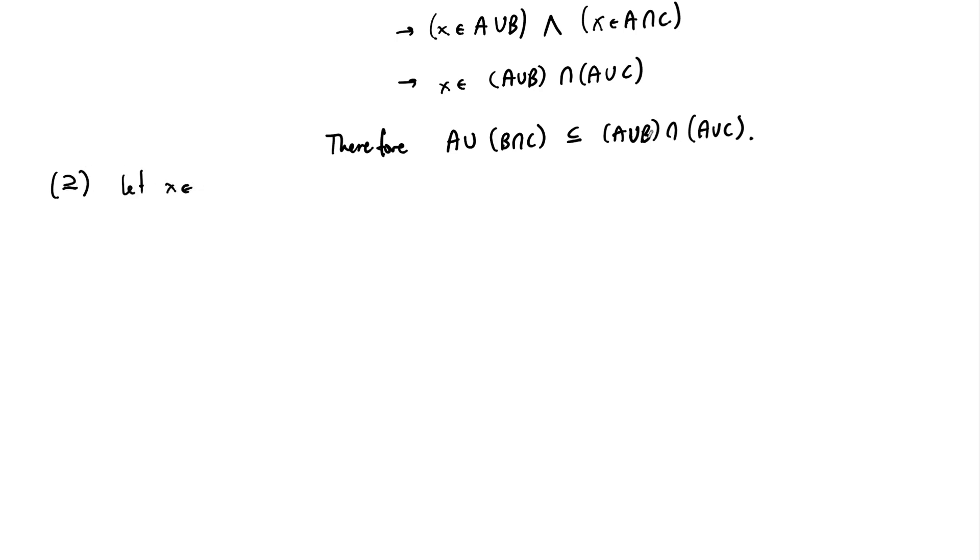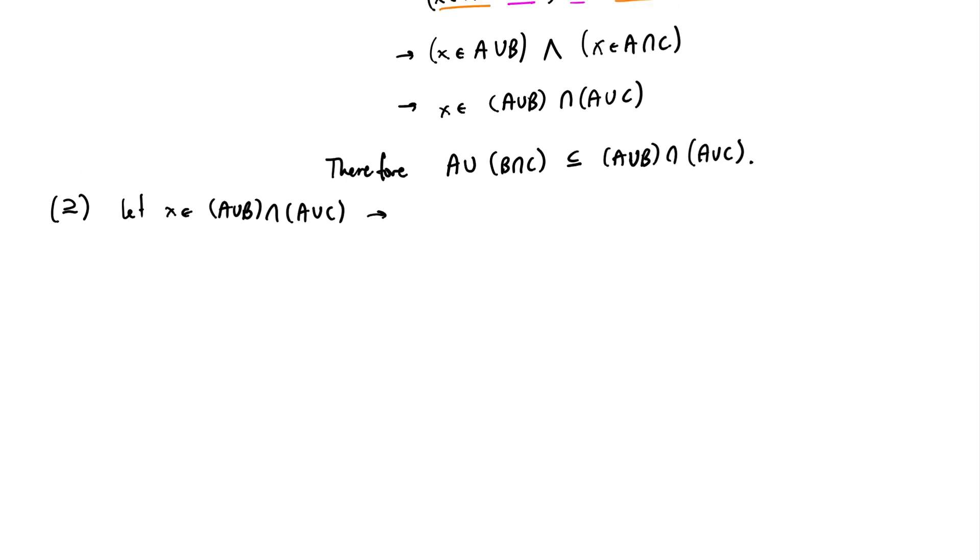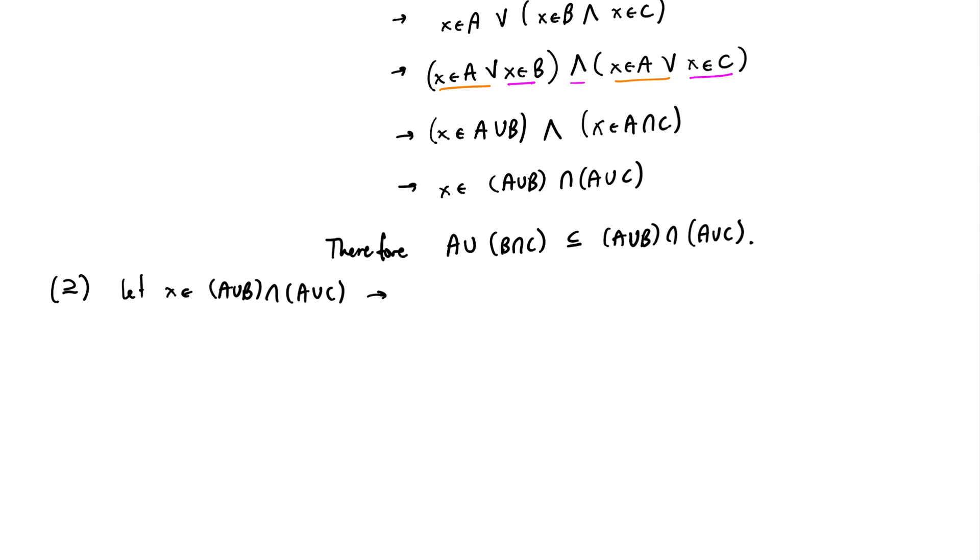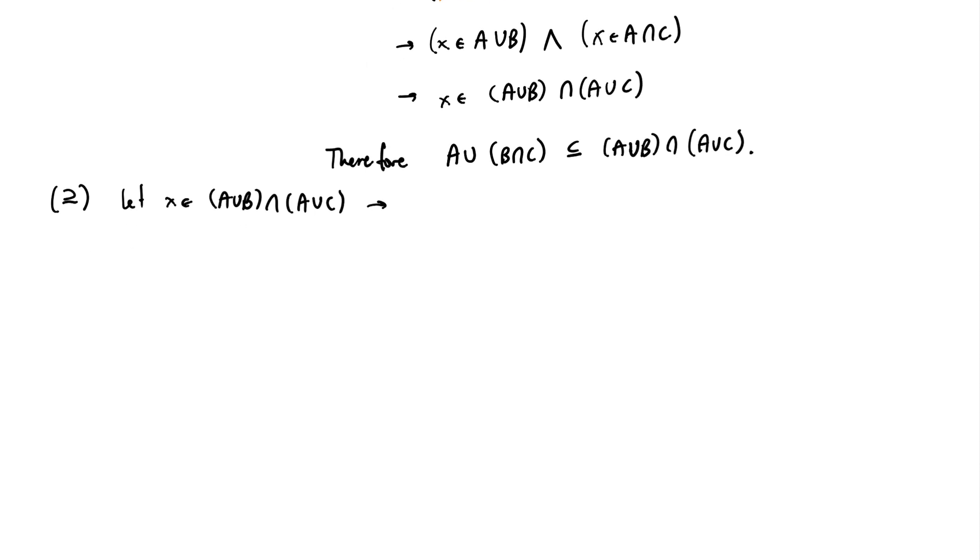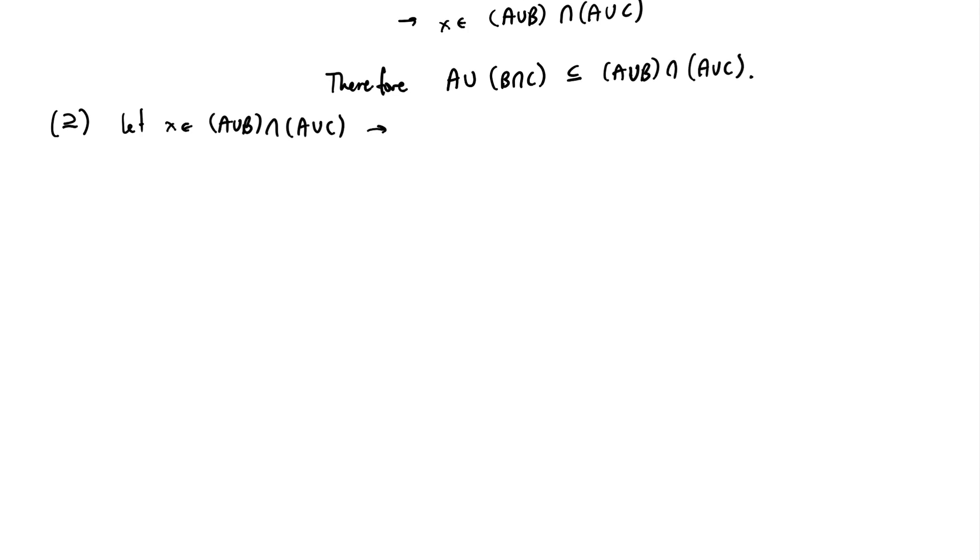So let's do it then. So the other direction, the containment's got to go this way. So this time we start with, let X be an element of this set on the right-hand side. So X is an element of A union B intersected with A union C. And at this point, we just start decomposing this the same way that we did. It's going to look very similar. It's almost like going directly in reverse.